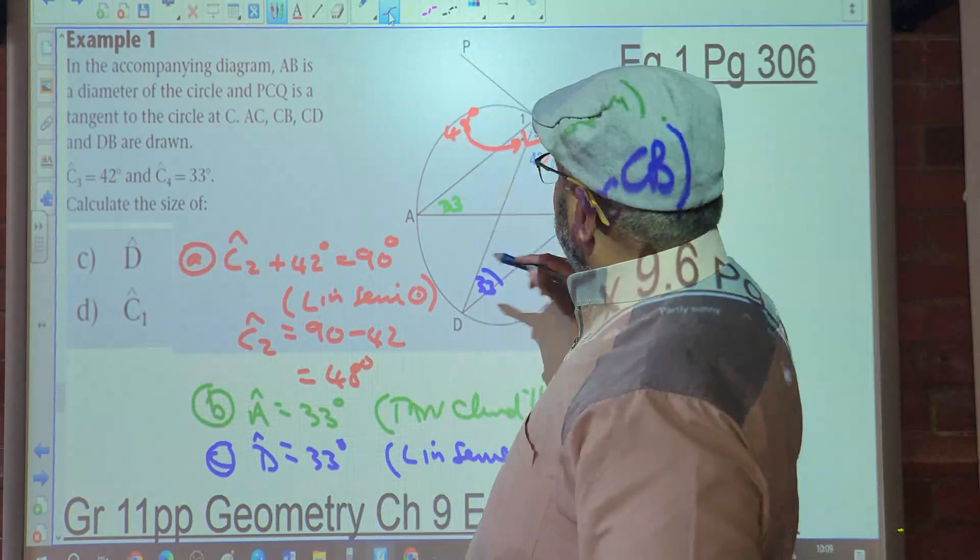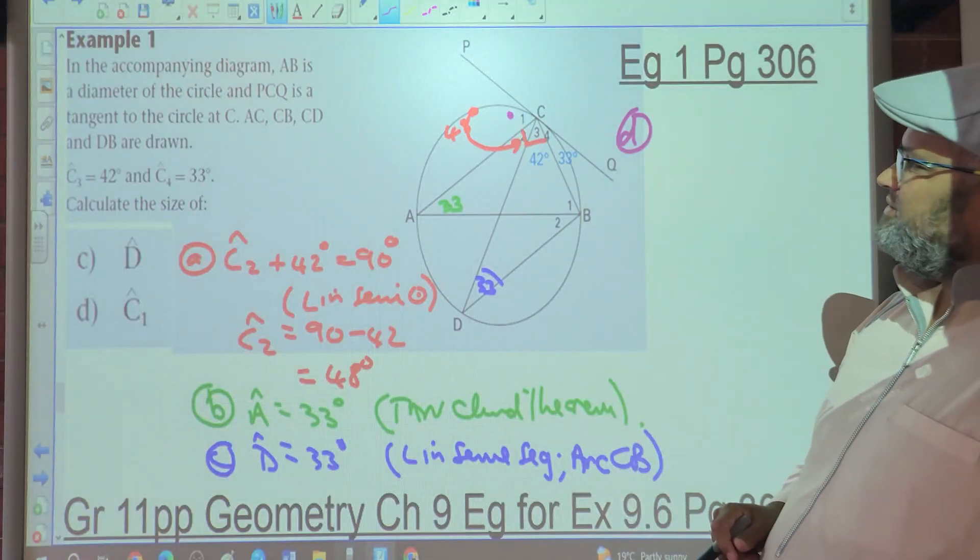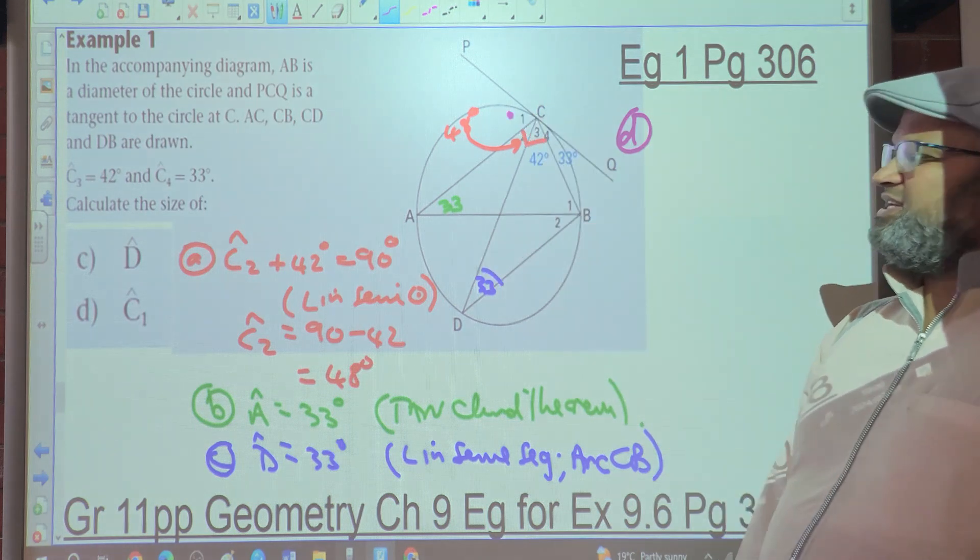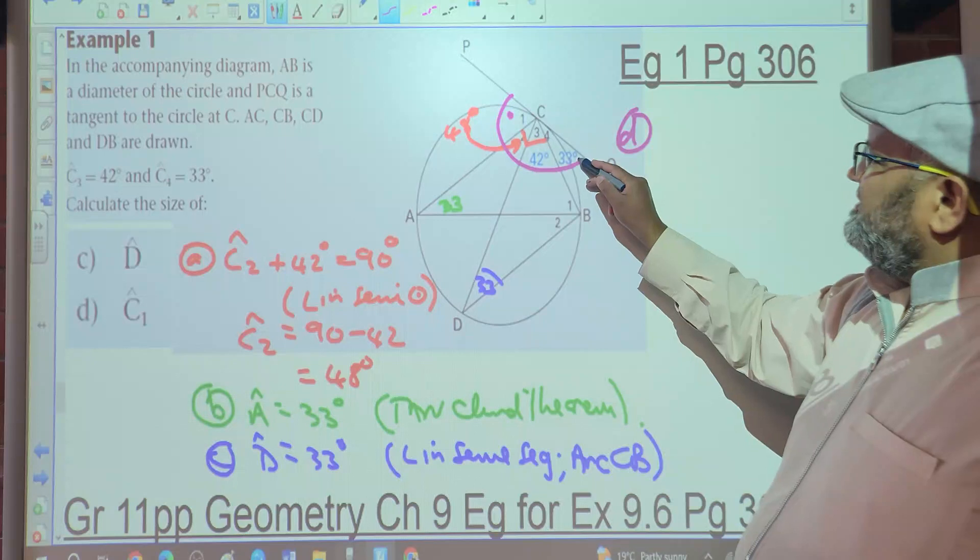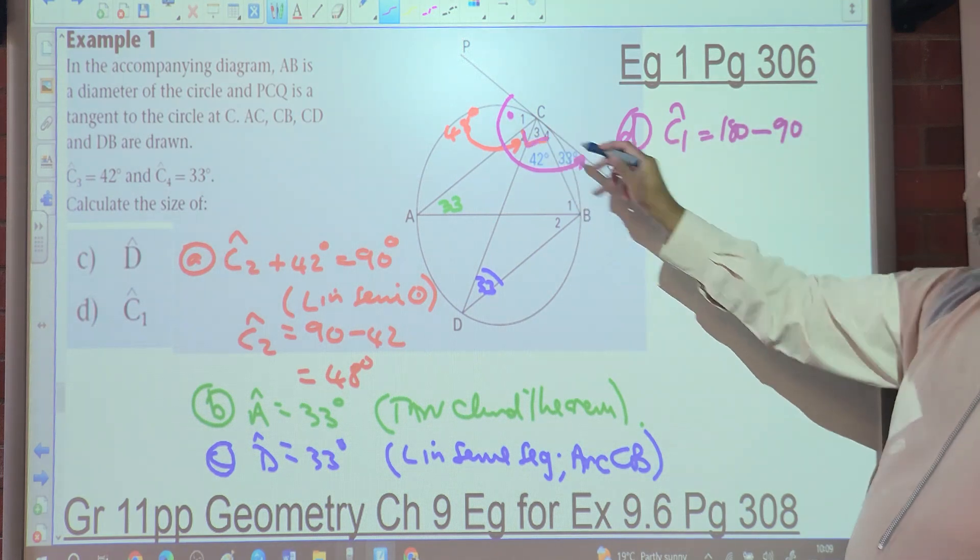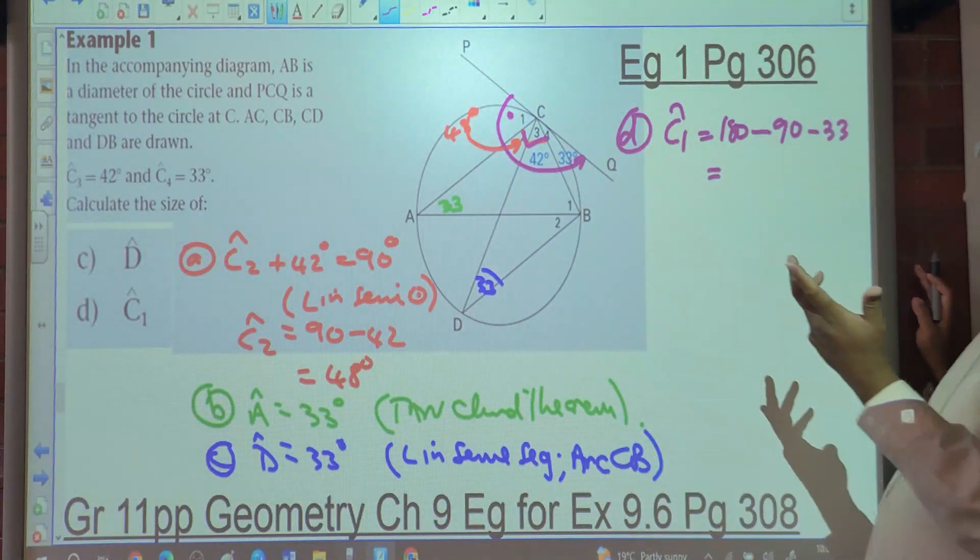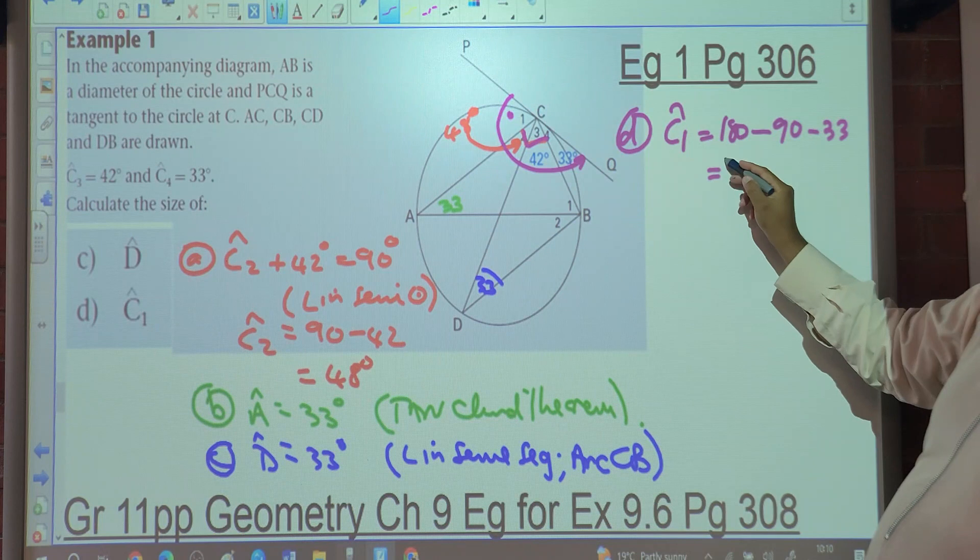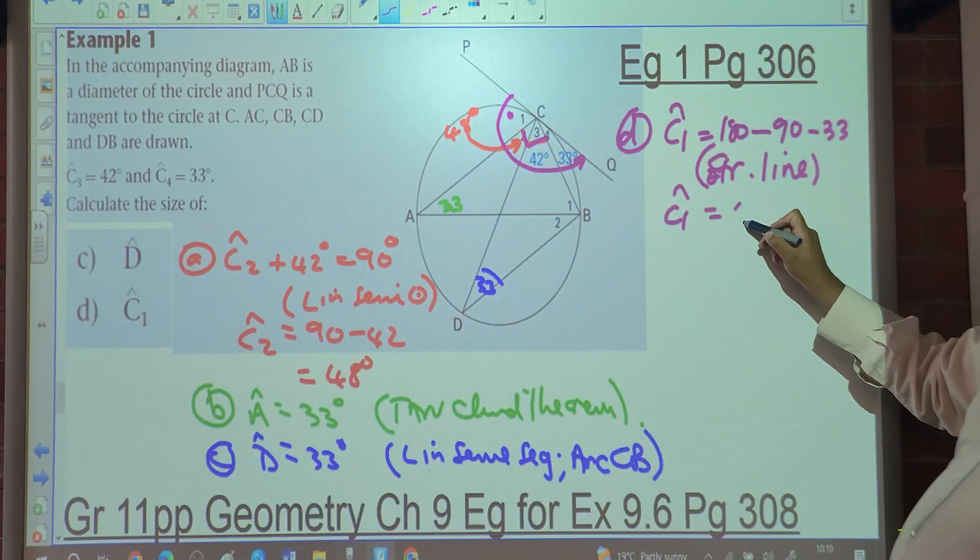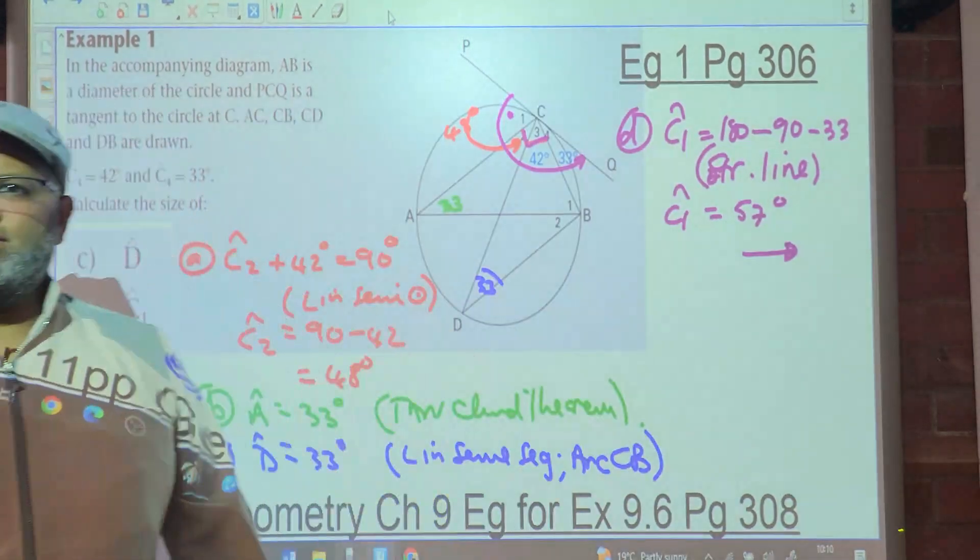And then the last question, which is D, asks you to work out C1. How are you going to calculate C1? Sum of the triangles. You're going to get B1 by tangent chord theorem, but there's an easier way. Angles in the straight line. Angle C1 is equal to 180 minus 90, which is this angle here, minus 33 degrees. Or you could have said 180 minus 48 minus 42 minus 33. It's the same. And the reason is, angles in the straight line. So angle C1 is equal to 57 degrees. Is there any confusion there? No.